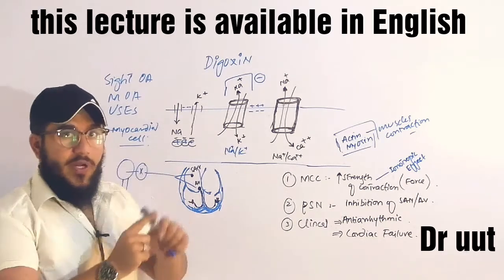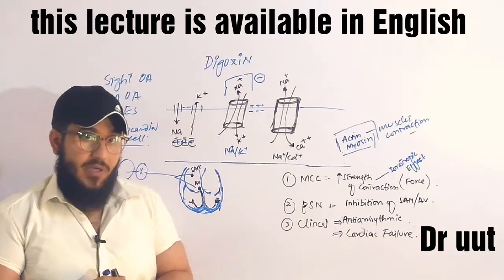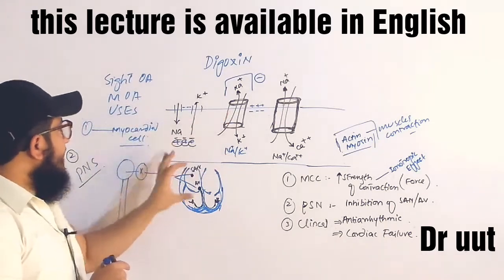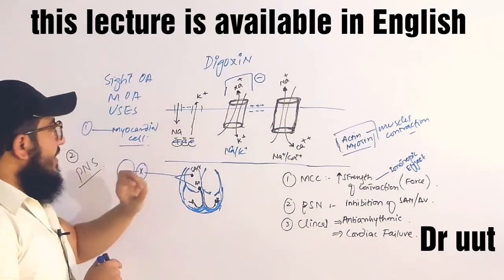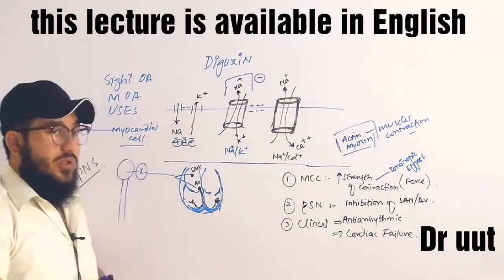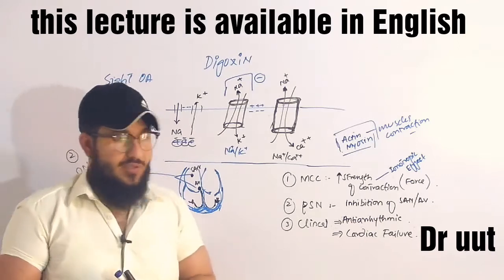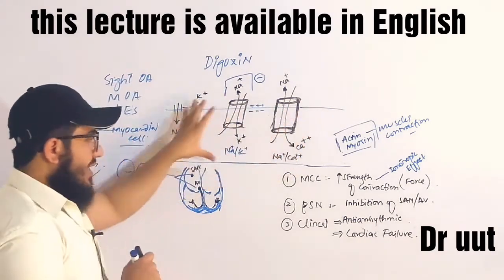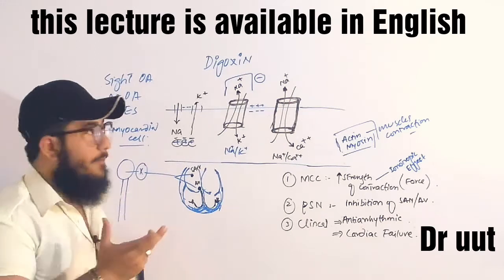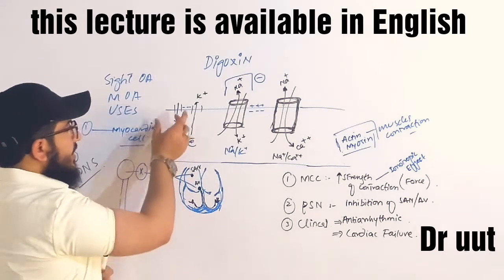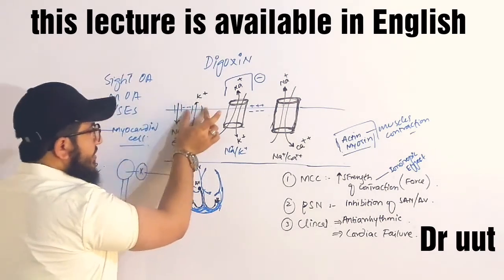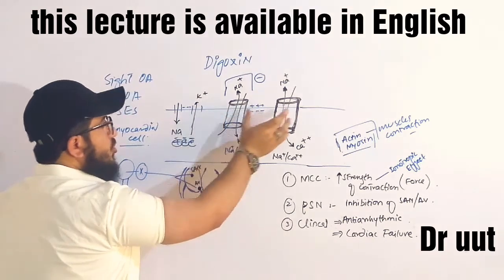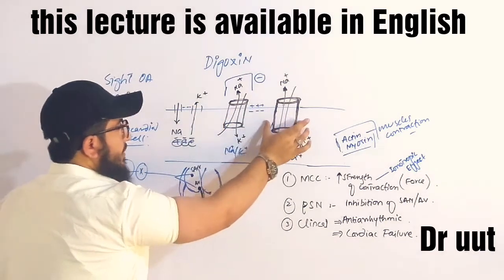In two parts we have digoxin's mechanism of action. First, let's discuss the mechanism of action. Here we have the normal contractile myocardial cell. This is the sodium channel, potassium channel, sodium-potassium pump, and sodium-calcium pump.